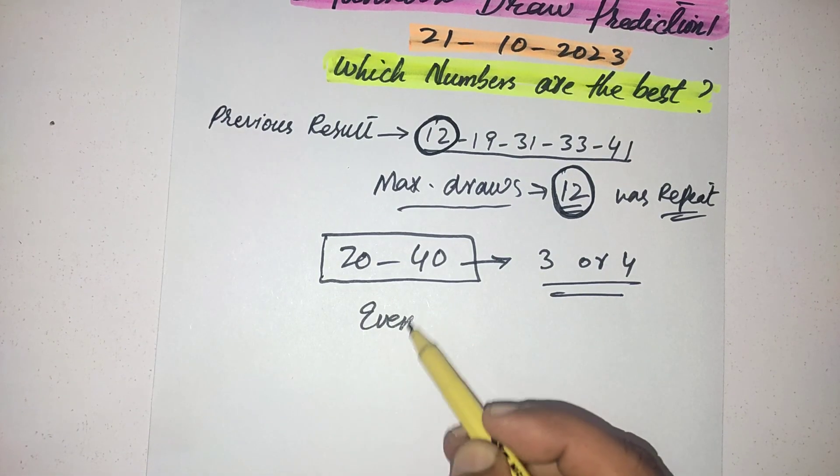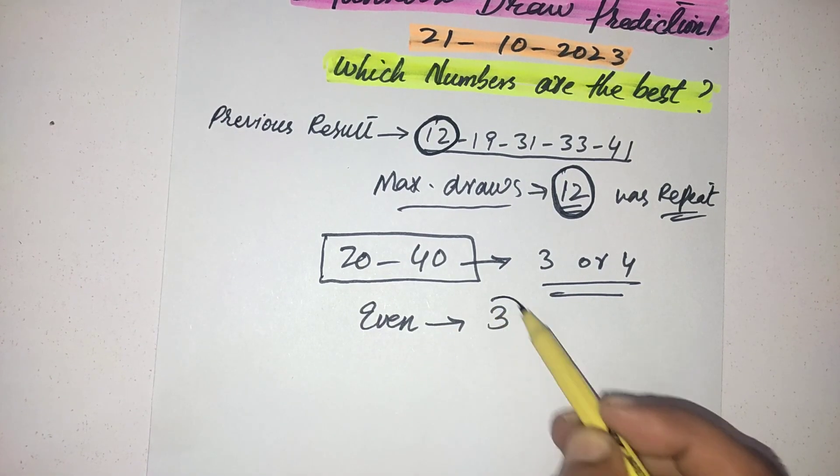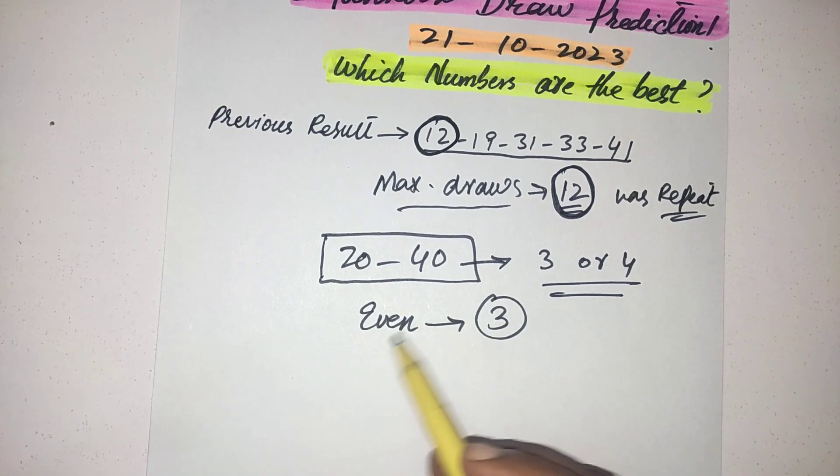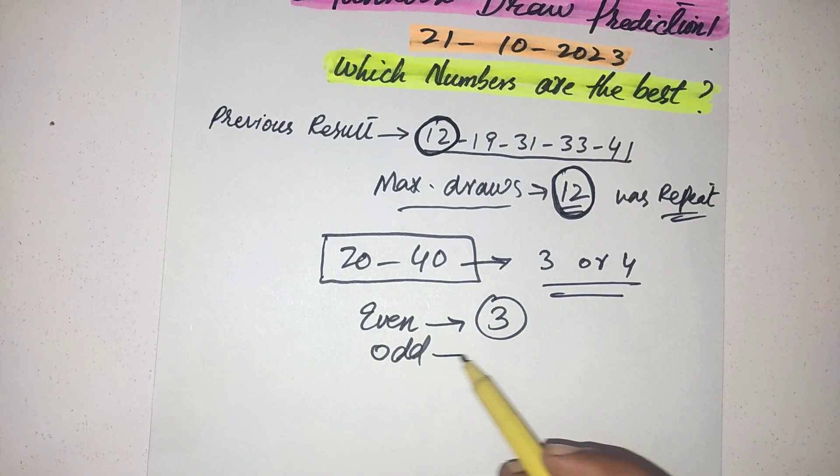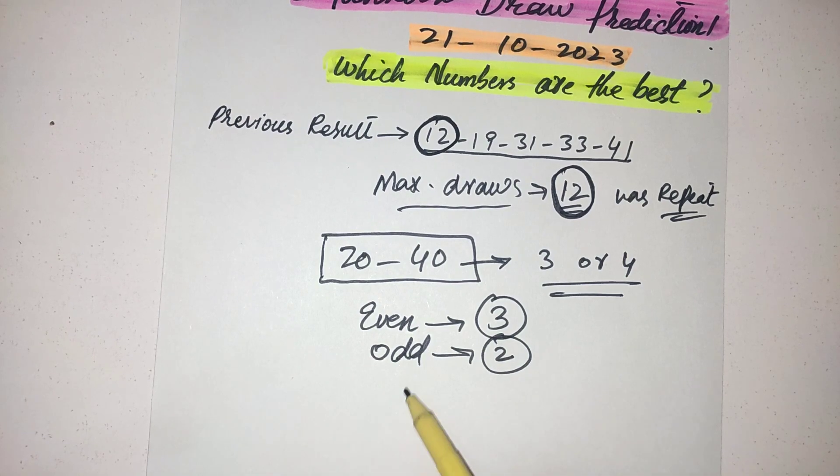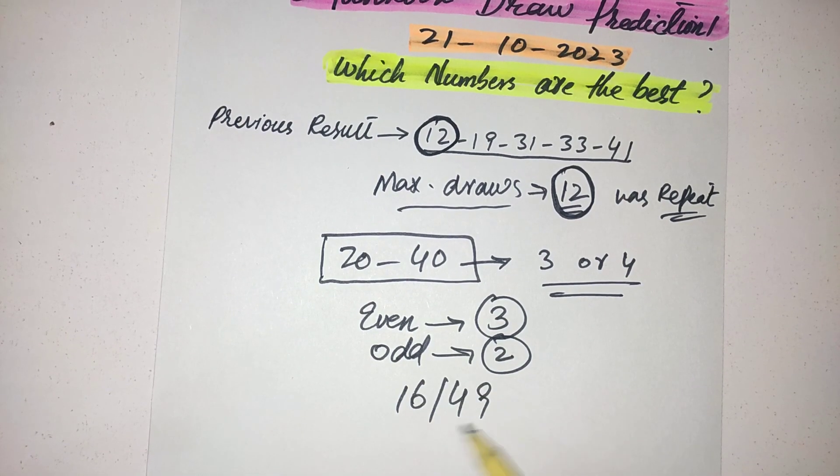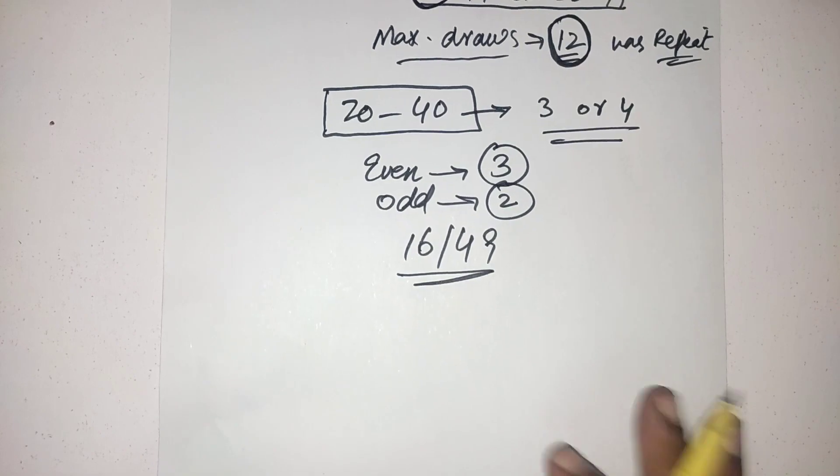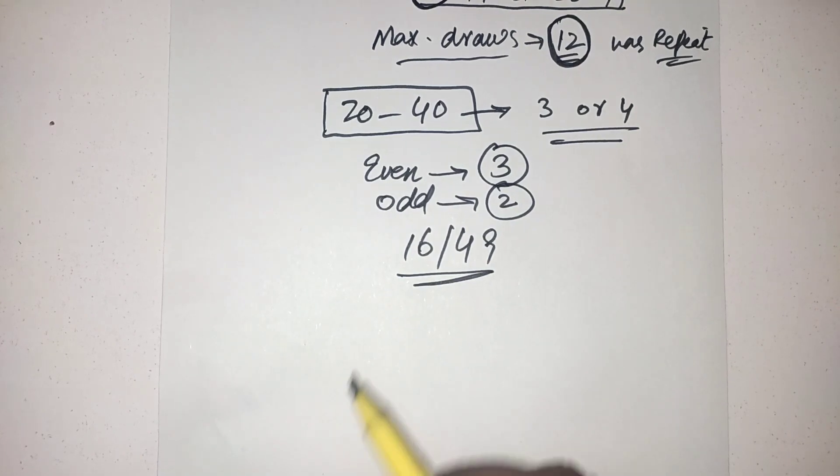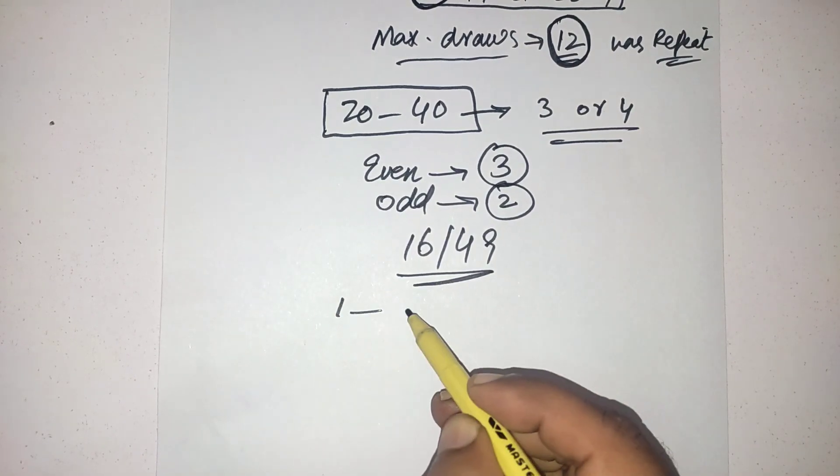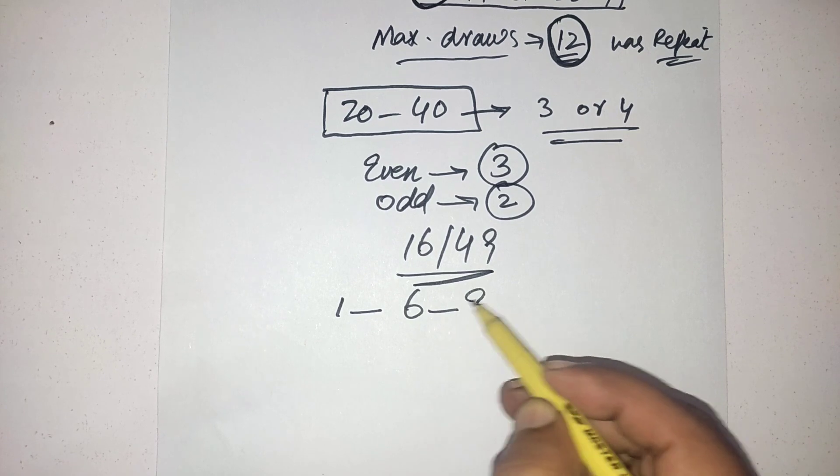My 16 powerful numbers out of 49: from 1 to 9 I have only three numbers, 1, 6, and 9.